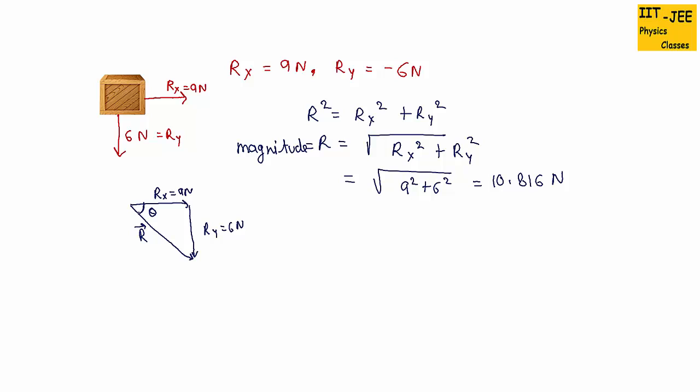Now we have to find the direction. For direction, we always find the angle theta from the horizontal. So for this, generally we use trigonometric function tan. If you remember.